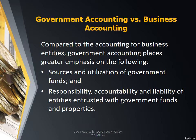Like accounting for business entities, financial reporting for government entities also has the overall objective of providing information useful for decision making. However, it places greater emphasis on the efficient and effective utilization of government funds, in which responsibility, accountability, and liability over government funds and properties are imposed. There are three main differences between government accounting and profit business accounting.